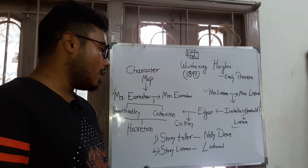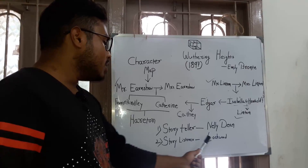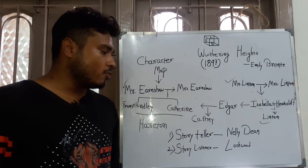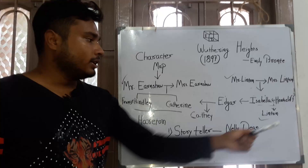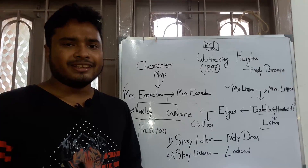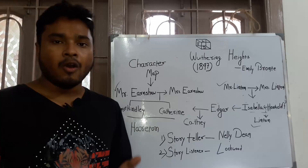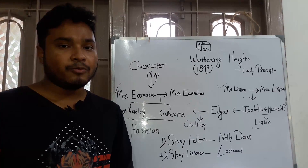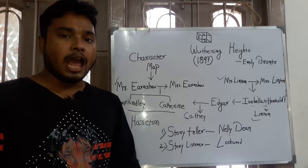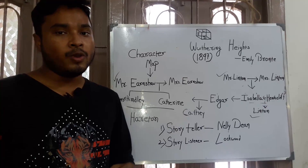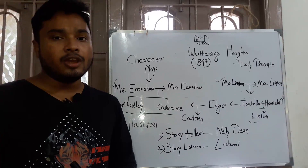Beside the main characters, we find two others: the storyteller and the story listener. Nellie Dean is the storyteller and Lockwood is the story listener. The novel begins with Lockwood, who visits Wuthering Heights as a tenant under the ownership of Heathcliff, which is placed in the moorland — a desert-like landscape. One night, Lockwood stays at Wuthering Heights, and when he falls asleep, he has a nightmare in which he sees Catherine, the female protagonist, appear as a ghost. Frightened, he rushes into the house. The next morning, he returns to Thrushcross Grange, and Nellie Dean, the housekeeper, tells him the entire story of Wuthering Heights and the ghost appearance of Catherine.